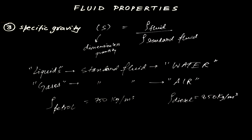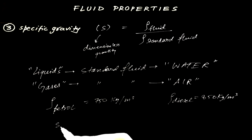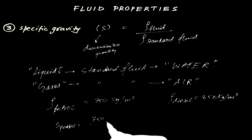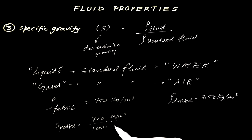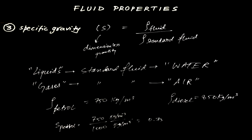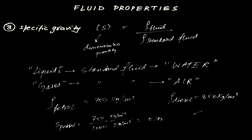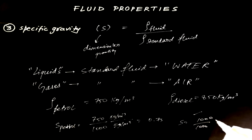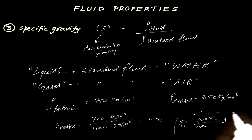If you need to find the specific gravity of petrol, you take the density of petrol (750 kg/m³) divided by the density of the standard fluid water (1000 kg/m³), and the units cancel out. Similarly, you can calculate for diesel. For water itself, the specific gravity is 1000 upon 1000, which equals 1.